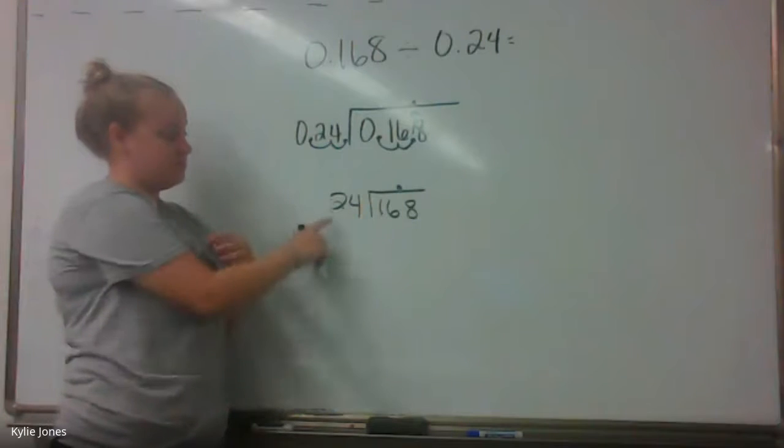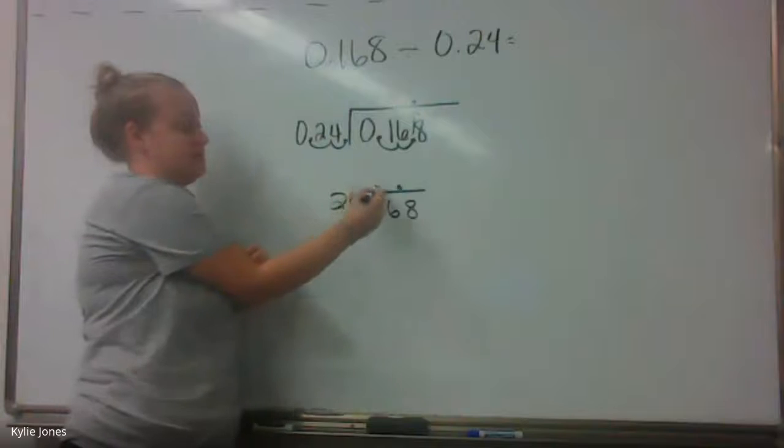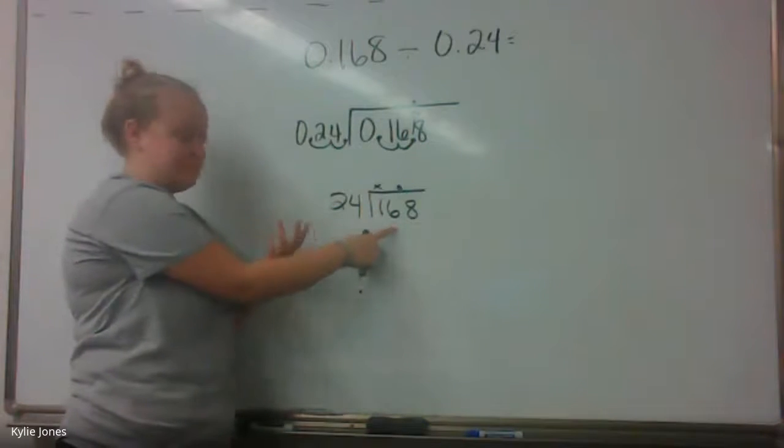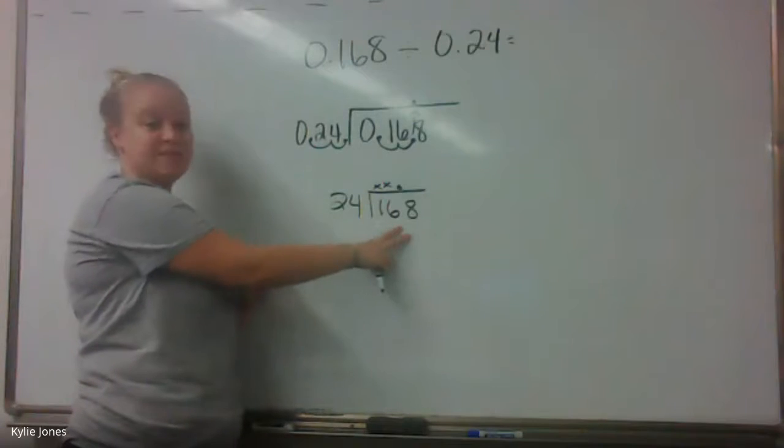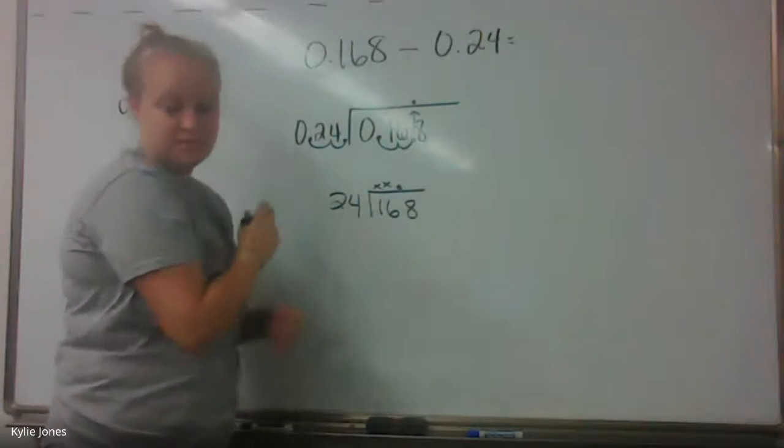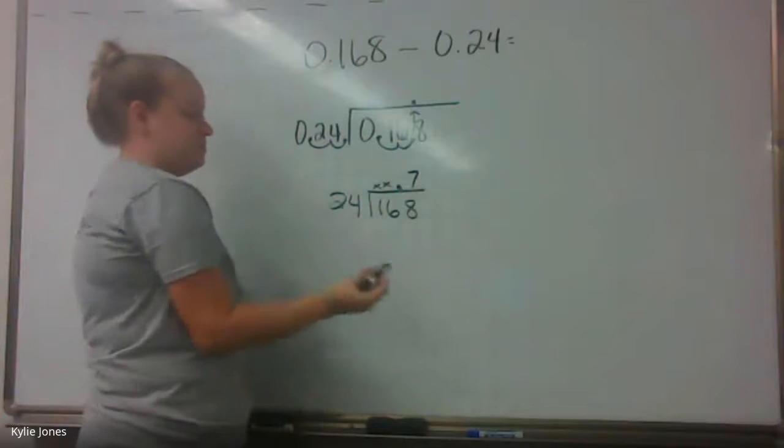First, we need to do the long division one. So 24, we need to ask ourselves, does it go into 1? It does not. So we don't put anything there. Does 24 go into 16? Nope. Nothing there. So that means it has to go on to 168. What is the answer? How many times? Seven. Good. It is seven.